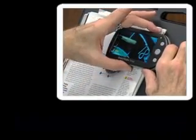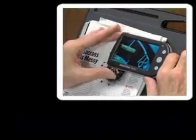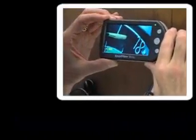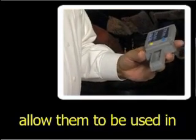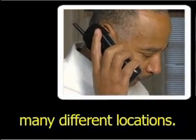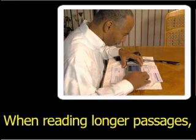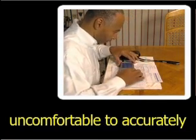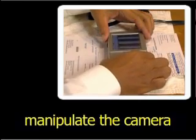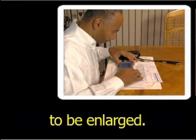A user lifts the unit off the material being enlarged. The enlarged image remains on the unit's screen. The flexibility of portable and pocket systems allow them to be used in many different locations. When reading longer passages, some users may find it uncomfortable to accurately manipulate the camera over the text or image to be enlarged.